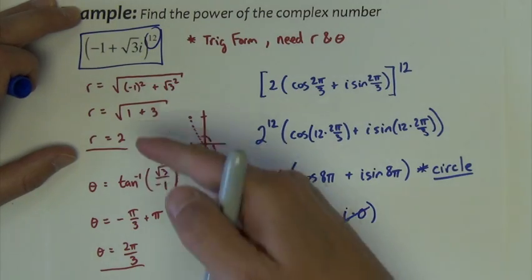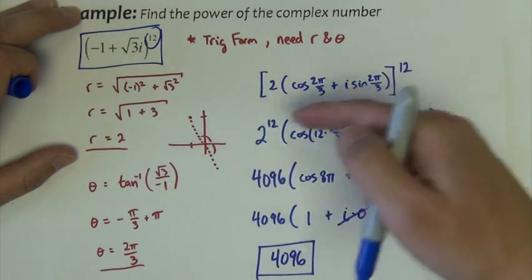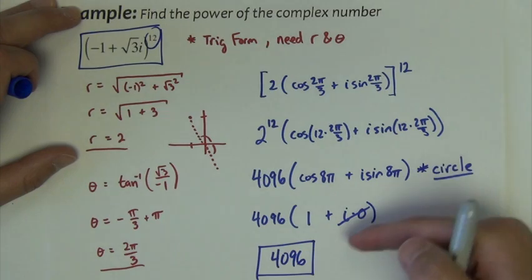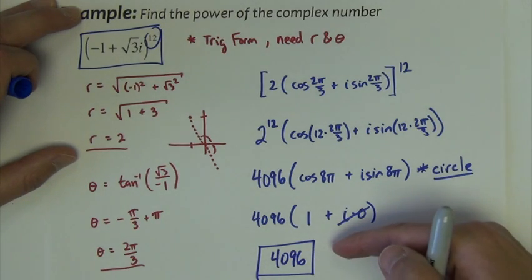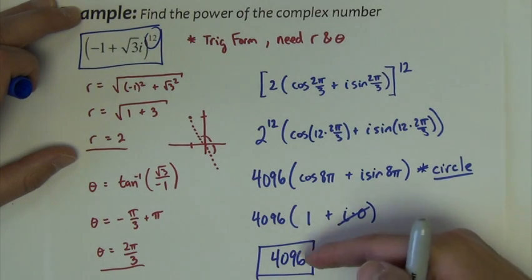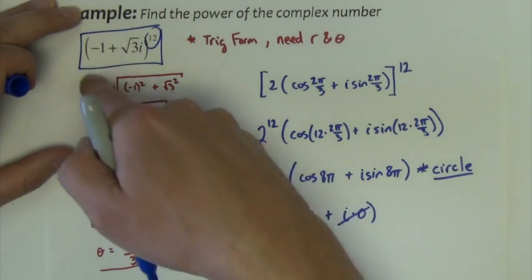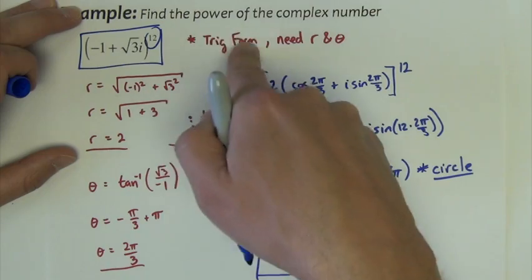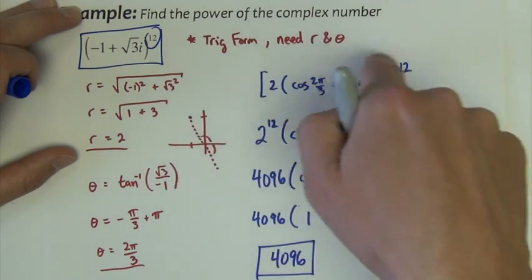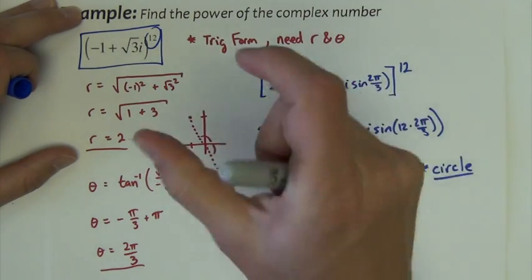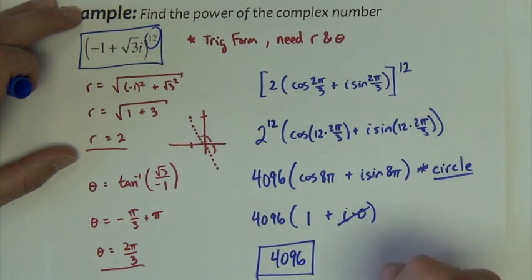Sure, that was a lot of work to find r and theta and run through De Moivre's theorem, but it was much, much faster than actually having to multiply this number by itself 12 times across 12 sets of parentheses.